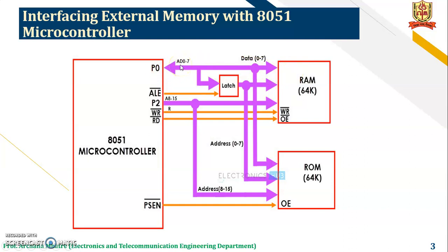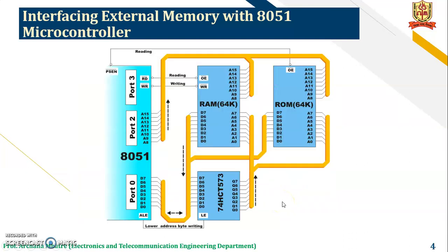Port 0 is a combination of address and data, so a latch is used to send the address A0 to A7, and the data can be interfaced directly as data 0 to data 7. The ALE pin is connected to the latch. Port 2 carries the higher bit address bus A8 to A15, so port 2 can be connected to the RAM memory and ROM memory. The read and write strobes are present; the write strobe is connected to the OE bar. The PSEN bar of the 8051 microcontroller is connected to the OE bar of the ROM memory.